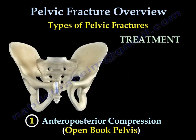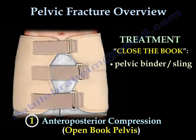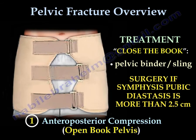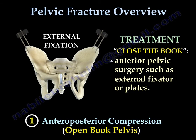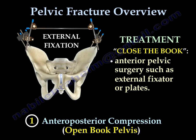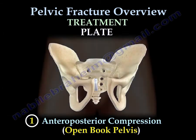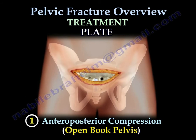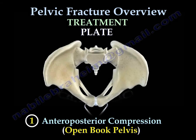Treatment for the open-book type is to close the book. A pelvic binder or sling is used, and surgery is indicated if the symphysis pubis diastasis is more than 2.5 cm. Surgery can be done through an external fixer or a plate. Here is an example of an external fixer and an anterior plate. After reaching the bone through the incision, you reduce the disruption of the symphysis pubis and fix it with the plate.